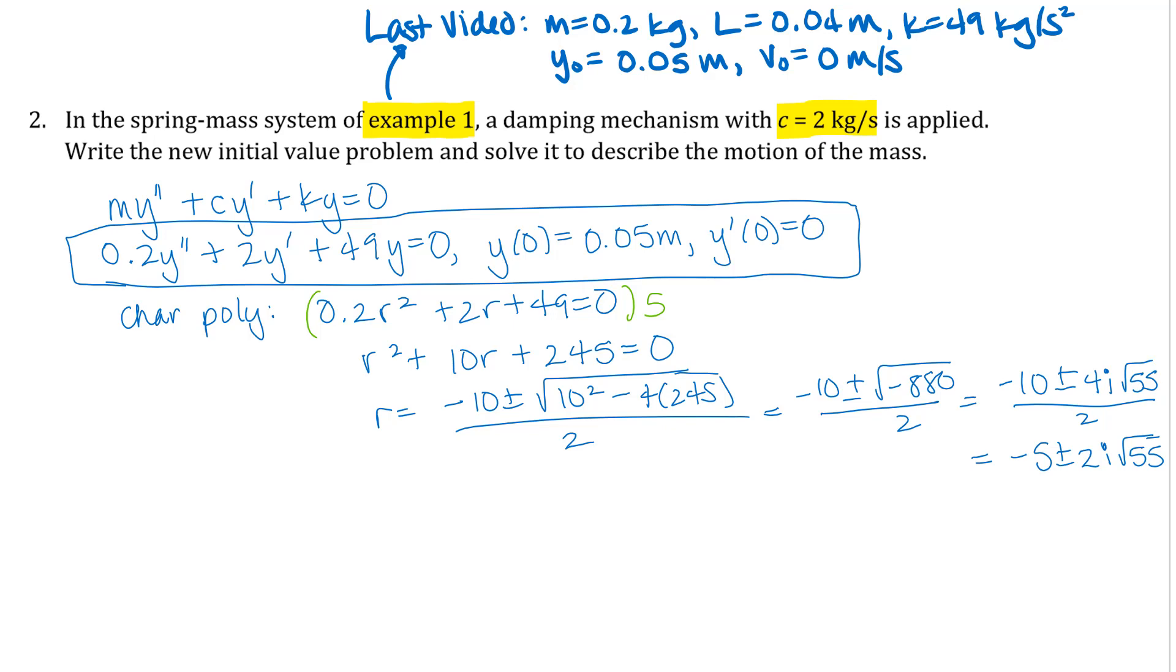That will control the amplitude of the oscillations, and the cosine of 2 square root of 55t and a sine of 2 square root of 55t. That will cause the actual oscillations, and the e to the negative 5t that times those will cause the amplitude of those oscillations to decrease as t gets larger.